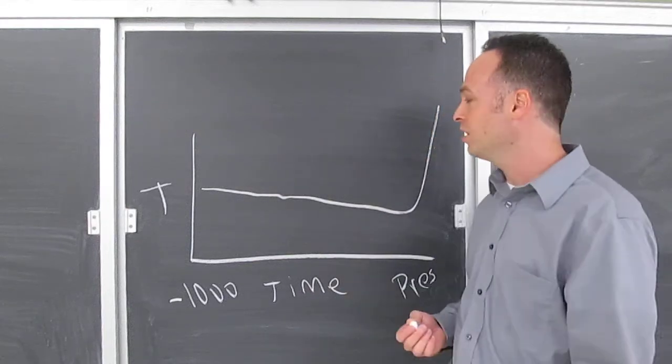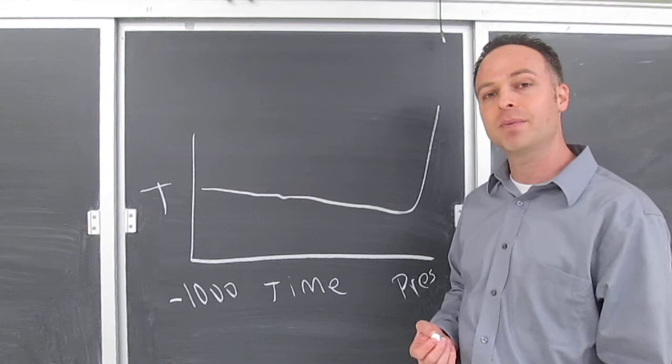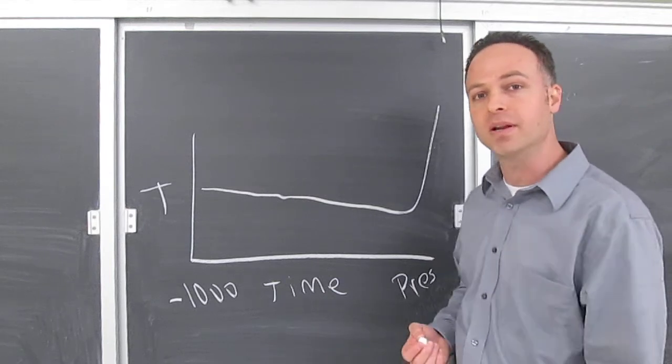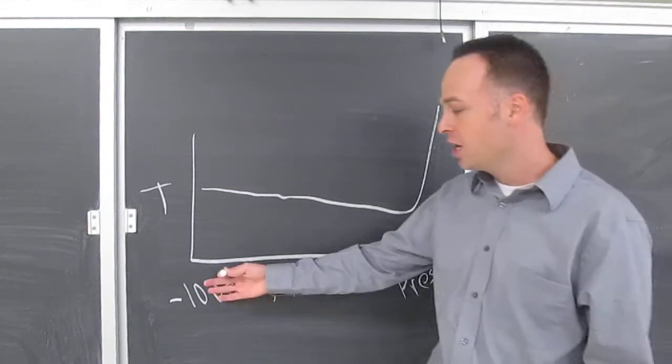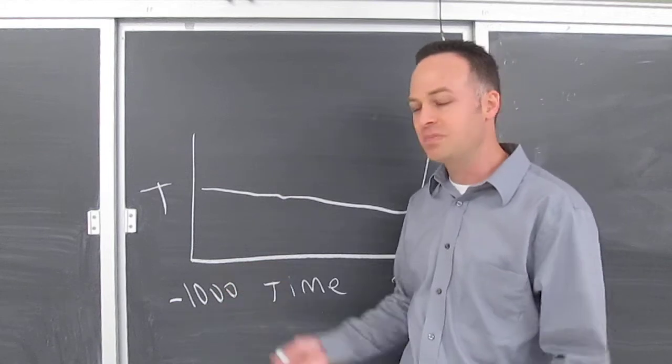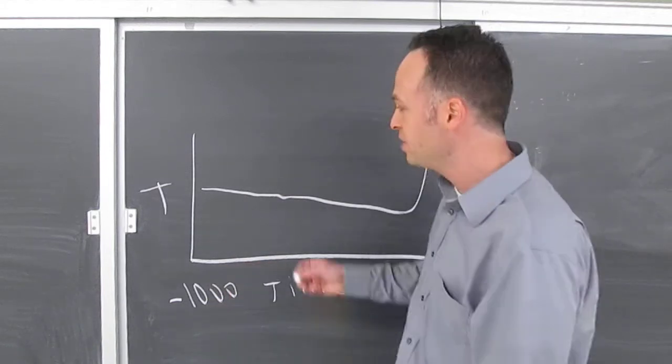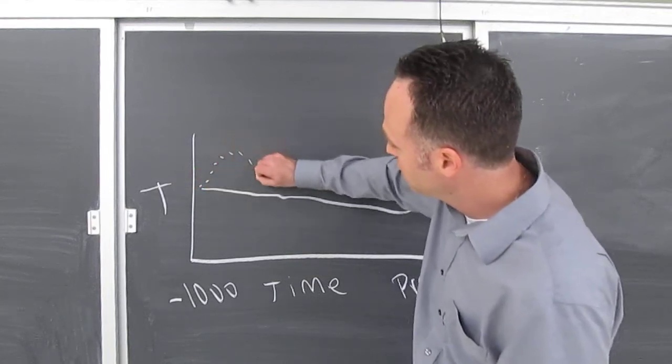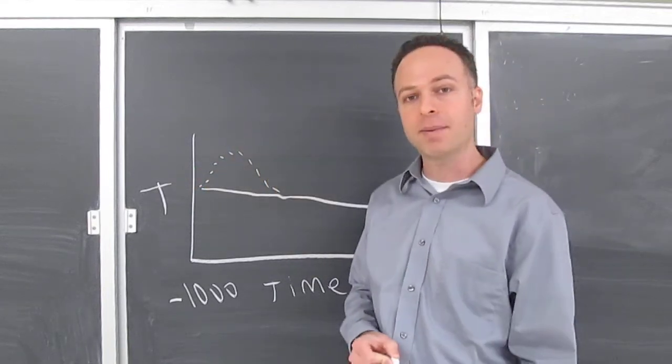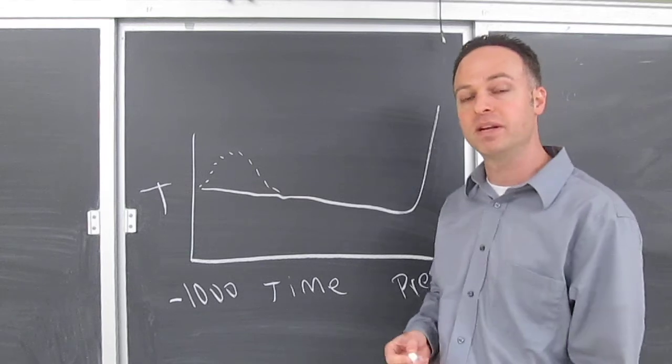For example, it leaves something out called the medieval warming period. The medieval warming period happened about a thousand years ago, maybe lasted for 200, 250 years. And you'd expect there to be a little bump in temperature about a thousand years ago from the medieval warming period.